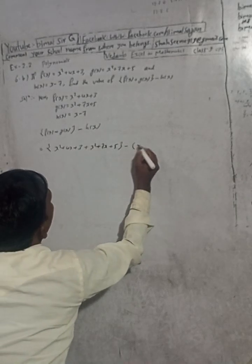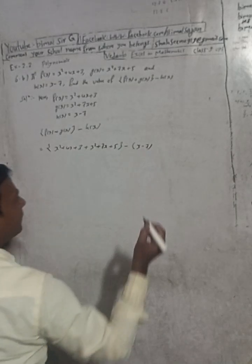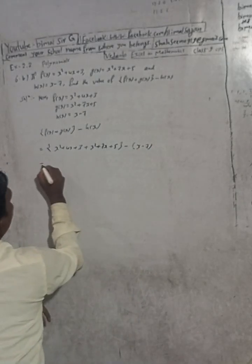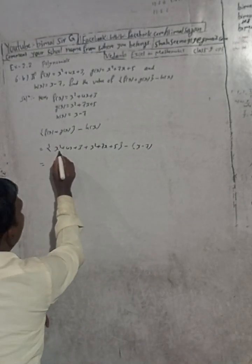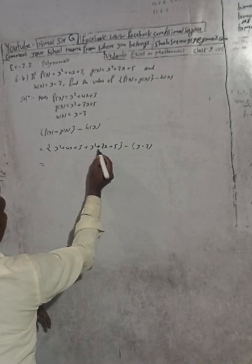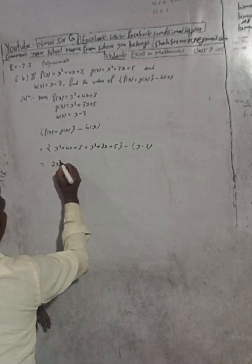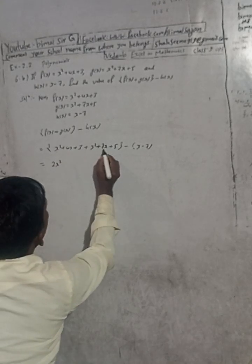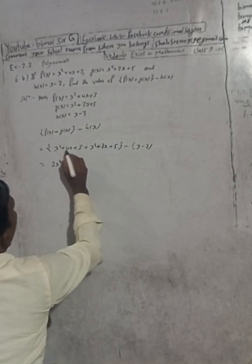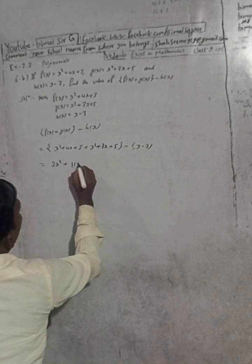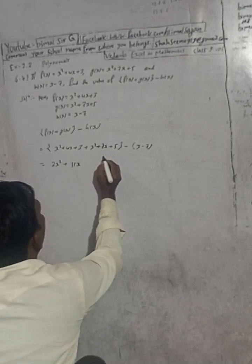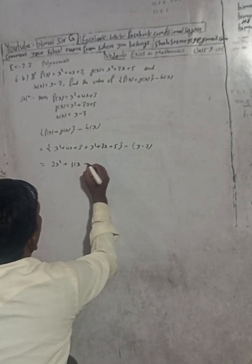Now close the curly bracket, and since there is a minus, we have to put h of x in brackets — that bracket is very necessary. Now combine like terms: x squared plus x squared gives 2x squared. Plus 4x and plus 7x gives 11x. Constant 3 plus constant 5 gives 8.